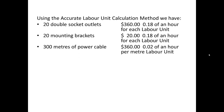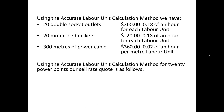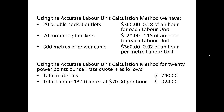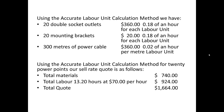To install cable, the labour unit is 0.02 of an hour per metre. Using the accurate labour unit calculation method for 20 power points, our sold rate for the quote is as follows: total materials $740, total labour at 13.2 hours at $70 per hour equals $924, giving a total quote of $1,664.